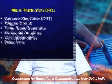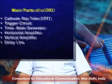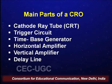The main parts of a CRO are: number one, the cathode ray tube; number two, the trigger circuit; number three, the time base generator; number four, the horizontal amplifier; number five, the vertical amplifier; and finally, the delay line. We would understand why an intentional delay has to be introduced while using a CRO, as we will see later — for that we have what is known as a delay line.